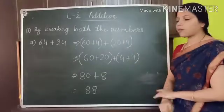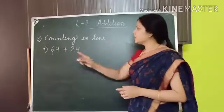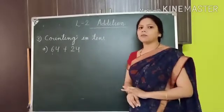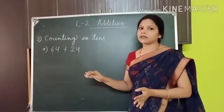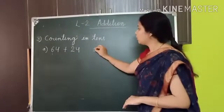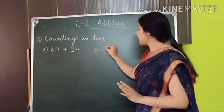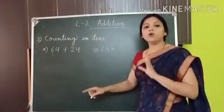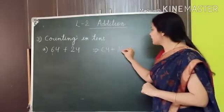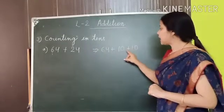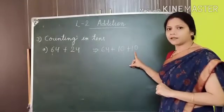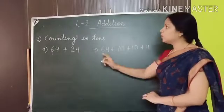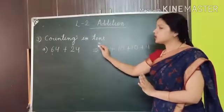You can pause this video and copy these things in your maths copy. Now the third way of addition is counting in tens. In this, what we have to do? We have to break the second number into tens, and then we have to add those tens to the first number. We write the first number as it is — 64 — then plus. Now the second number, 24, we break into tens: there are 2 tens and 4 ones. So we write 10 plus 10 plus 4.